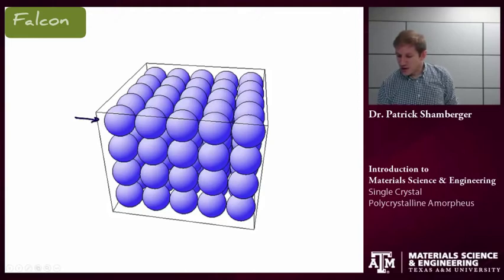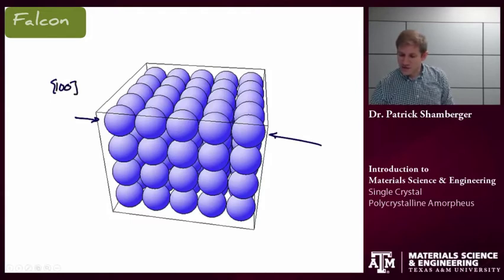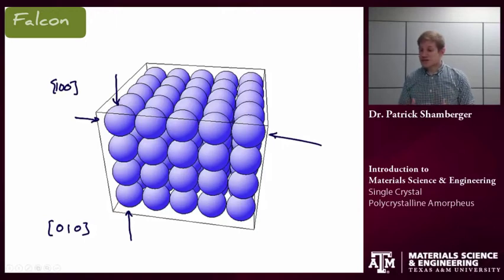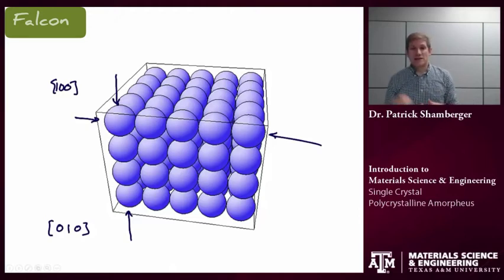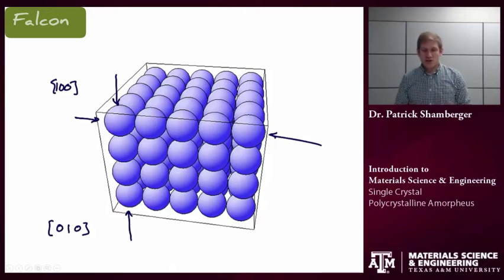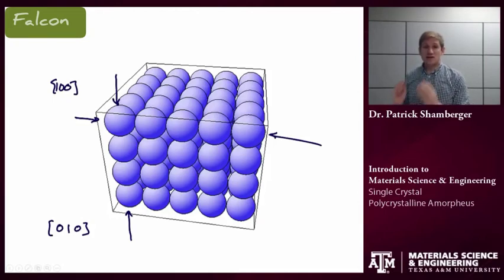One other important point: if I look at the properties in one direction, say the 1,0,0, and I look at the properties in another direction related by symmetry, say the 0,1,0 direction, and these two directions are symmetrically equivalent, then I would expect the properties to be identical. So if I take a single crystal that happens to be cubic and measure its elastic modulus in the 1,0,0 direction and again in the 0,1,0 direction, these two directions are symmetrically equivalent, and therefore the properties are going to be equivalent in those two directions. The symmetry of the properties of a material is related to the symmetry of the crystal structure.